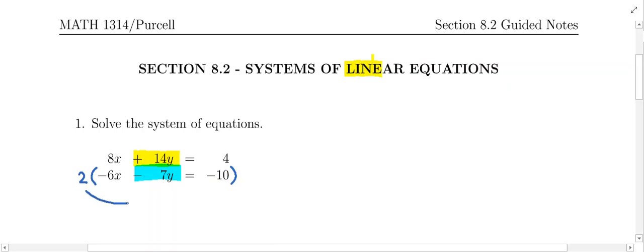So that would put a negative 14y in this position, which would cancel with the 14y from the first equation. I'm not going to make any changes to the first equation. I'm going to leave it alone. 8x plus 14y equals 4. And then I'm going to multiply 2 through the next equation, the entire thing.